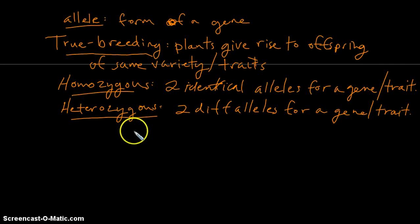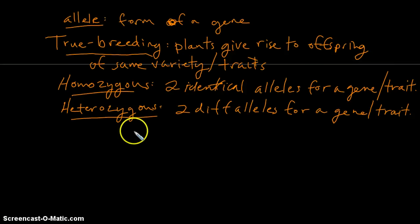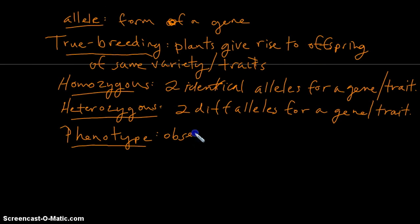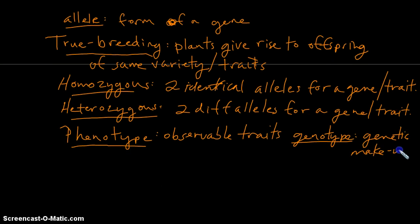Now we want to distinguish phenotype and genotype. When I think phenotype, I think of physical characteristics, so we say those are observable traits, whereas genotype refers to genetic makeup of the organism. So what genes does it possess?